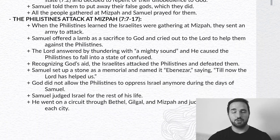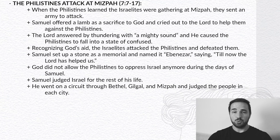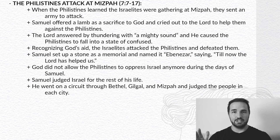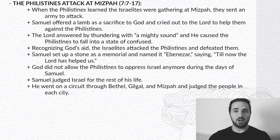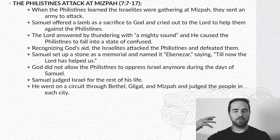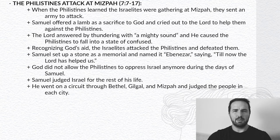Our last section is verses 7 through 17: the Philistines attack at Mizpah. When the Philistines learned the Israelites were gathering there, they sent an army to attack. Samuel offered a sacrifice of a lamb to God and asked for help in the battle. The Lord answered by thundering with a mighty sound, causing the Philistine army to fall into confusion. The Israelites fought and defeated them. Samuel then erected a stone and called it Ebenezer, saying, 'Till now the Lord has helped us.'